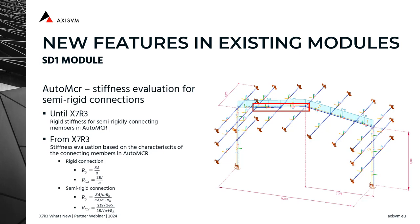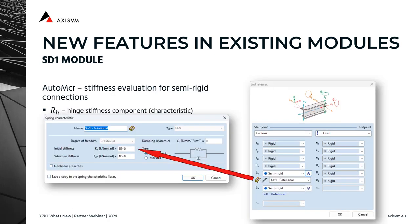The implemented correlations are highlighted on this slide. The RH coefficient in the formulas is the hinge stiffness component. Interpretation of this can be seen here.